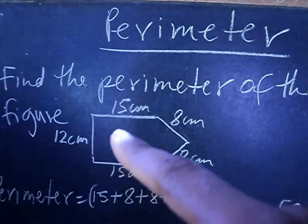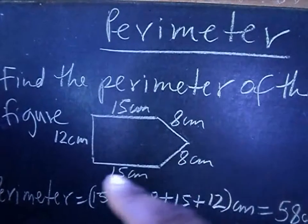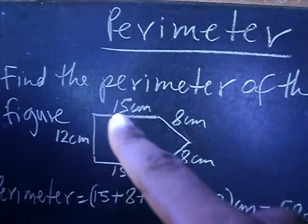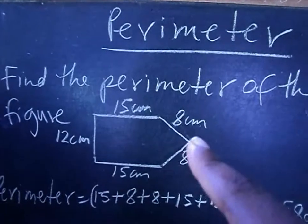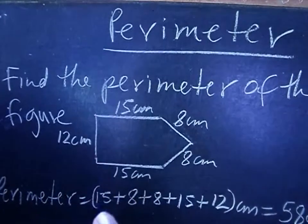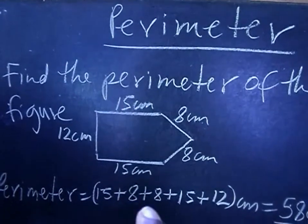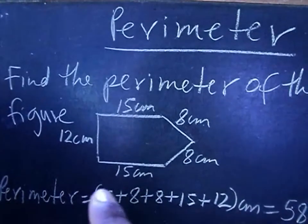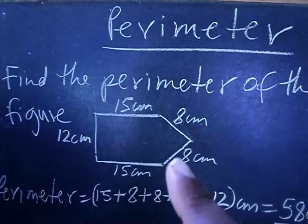So if you want to find the perimeter of this figure here, you have to add up everything. So we're going to add up 15 plus 8 plus 8 plus 15 plus 12. We're going to add up all of that and you will get the perimeter.